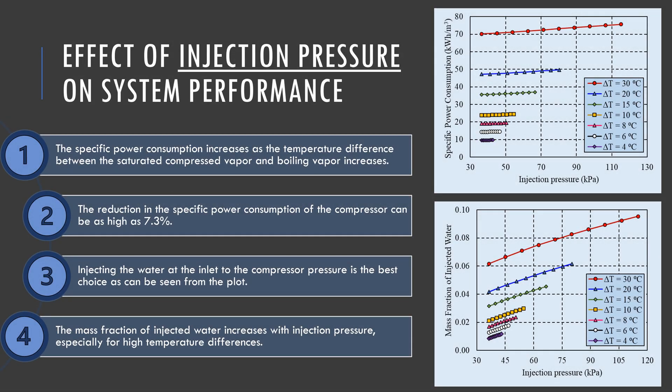From the simulation results, the water injection pressure and temperature lift across the compressor affect both the specific power consumption of the compressor and the mass fraction of injected water — both defined relative to the desalinated water amount. As the injection pressure and temperature lift increase, both the mass fraction of injected water and the specific power consumption increase. The reduction in specific power consumption can be as high as 7.3%, which is significant. Injecting water at the inlet pressure of the compressor is the best choice, and the mass fraction of injected water did not exceed 10% of the compressor inlet.